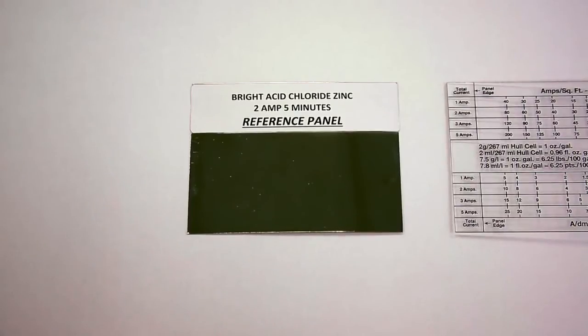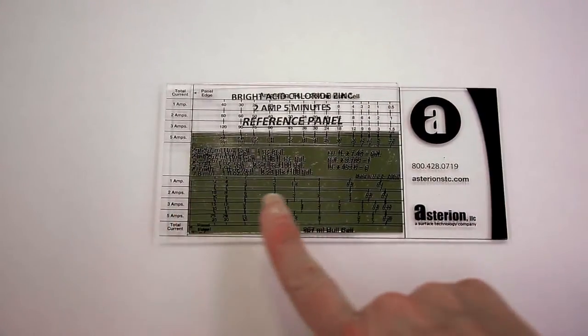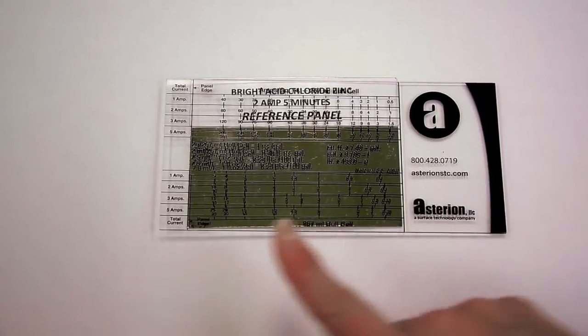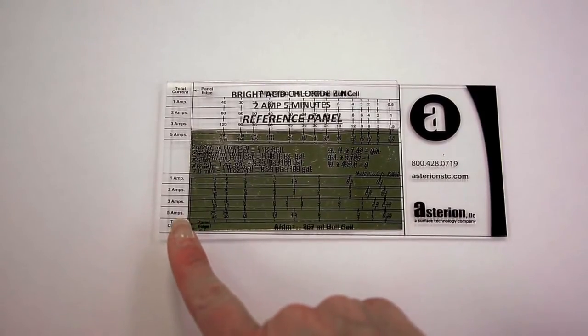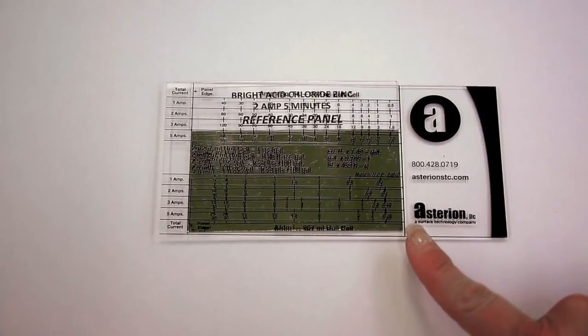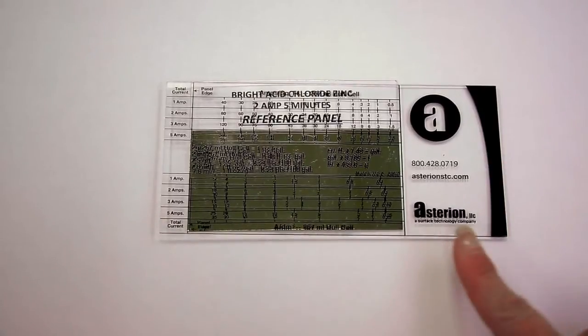Hull cell evaluation. Simply put, the hull cell ruler is laid on top of the completed hull cell panel. The grid of the hull cell ruler provides a reference to evaluate the plating across a range of current densities. The high current density is located on the left side of the panel, closest to the anode, while the low current density is located on the right side, furthest away from the anode. The range of current density flows from left to right.